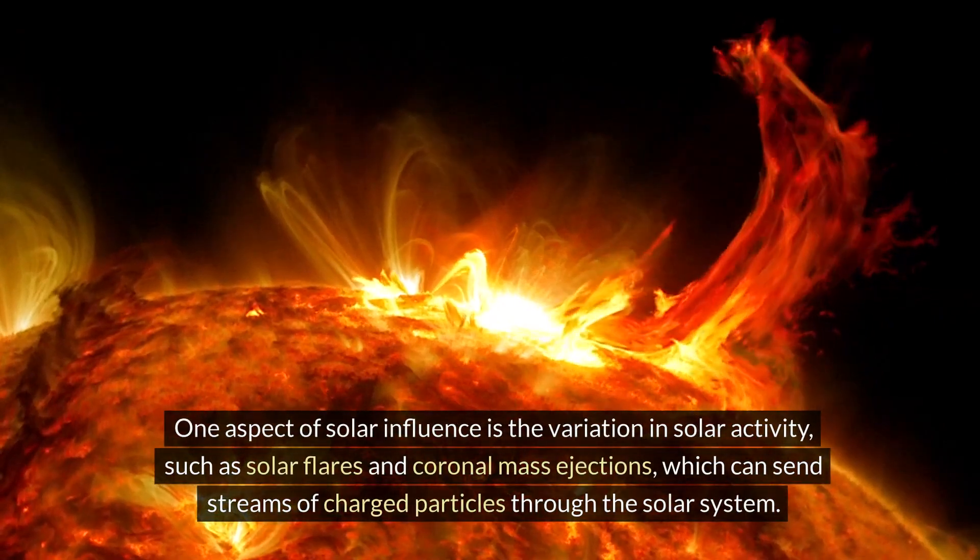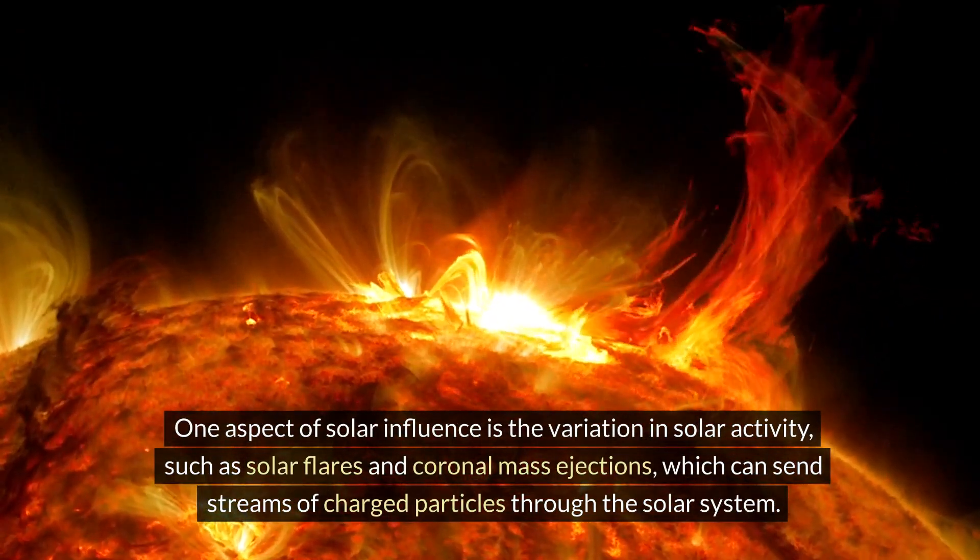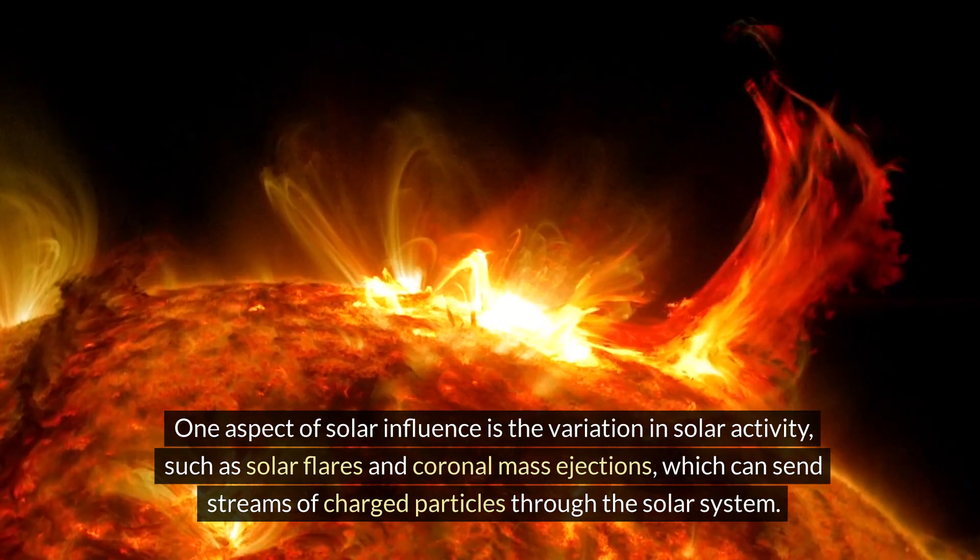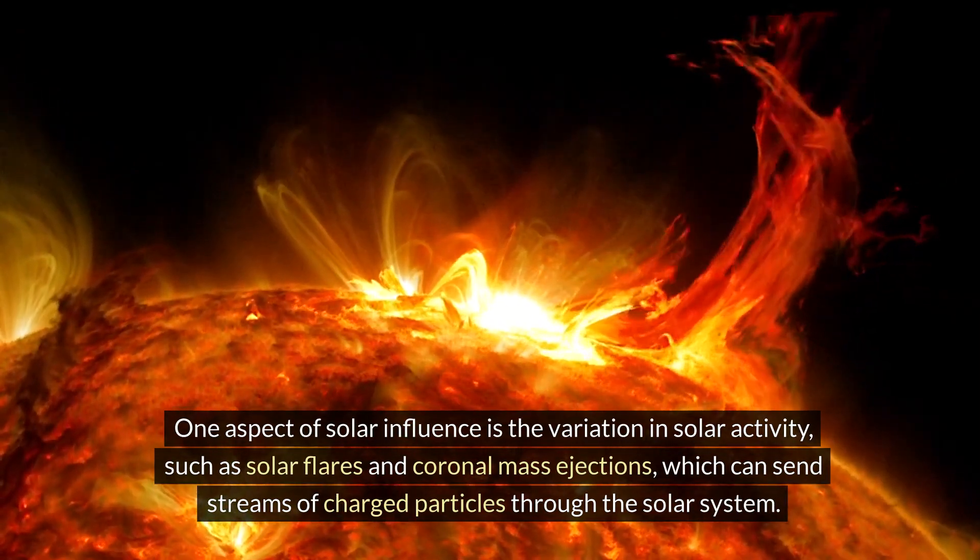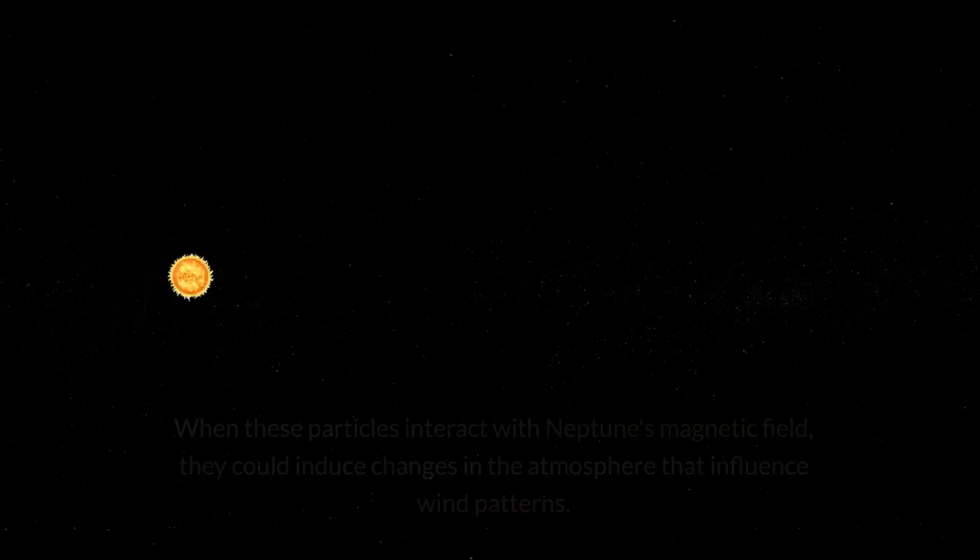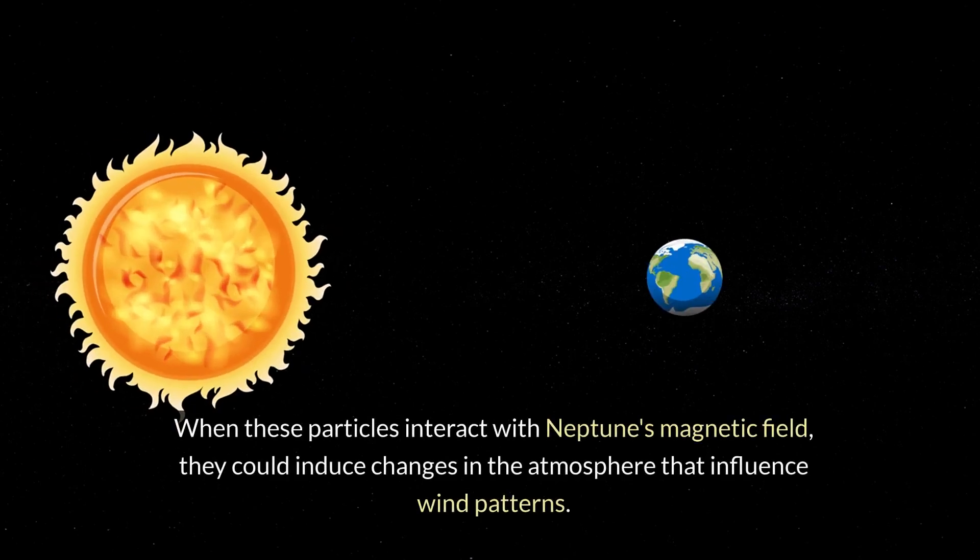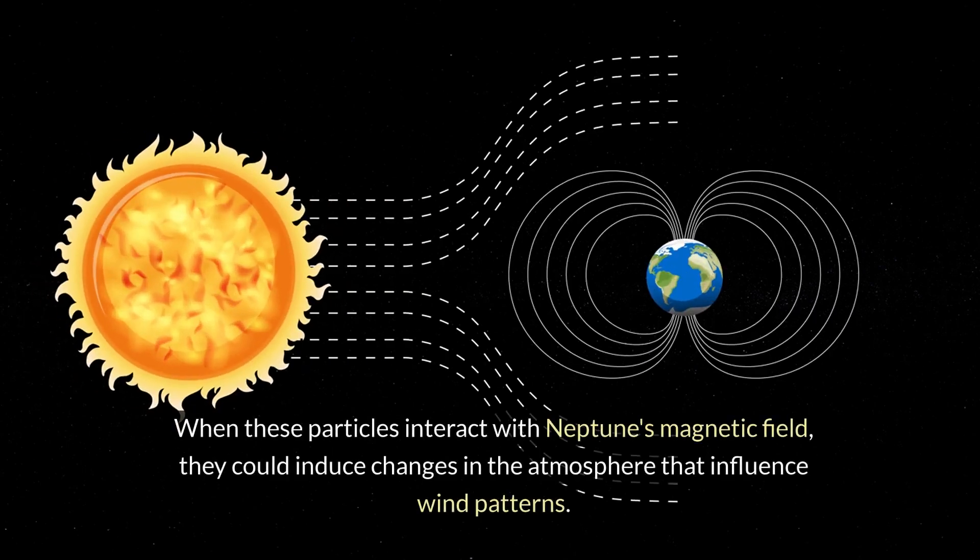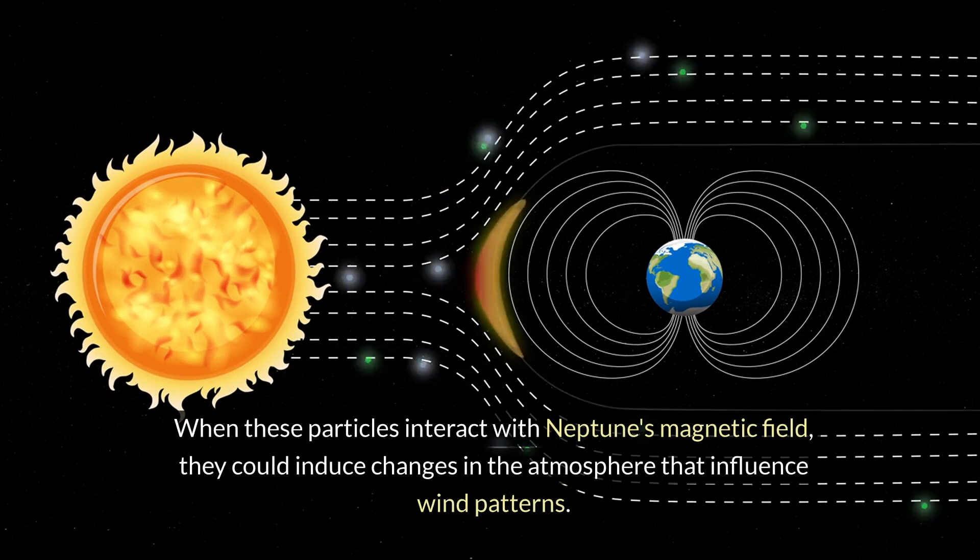One aspect of solar influence is the variation in solar activity, such as solar flares and coronal mass ejections, which can send streams of charged particles through the solar system. When these particles interact with Neptune's magnetic field, they could induce changes in the atmosphere that influence wind patterns.